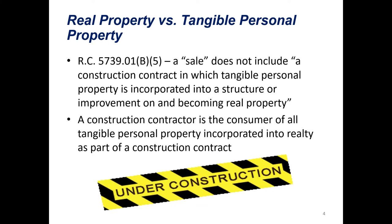ORC 5739-01 is generally written so that sales are presumed to be taxable. From there, it states certain sales that aren't taxable and creates certain exemptions. What we're going to look at today is Revised Code 5739-01-B5, which states that a sale does not include a construction contract in which tangible personal property is incorporated into a structure or improvement on and becoming real property. So if you have lumber and you incorporate it into a structure—you build a house—that house is real property, so the wood incorporated into it is not a taxable sale to the contractee. ORC 5739-01-B5 goes on to state that the construction contractor is then the consumer of that tangible personal property incorporated into the realty. When the contractor buys the lumber, they're charged tax on that purchase.